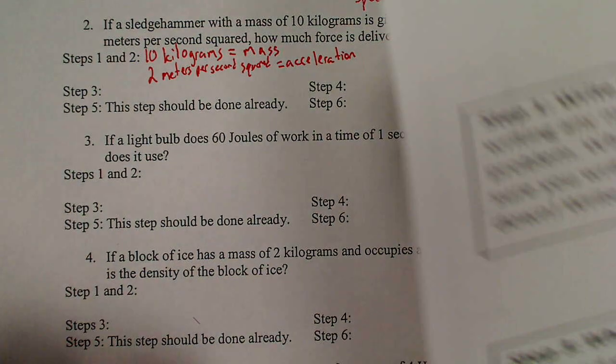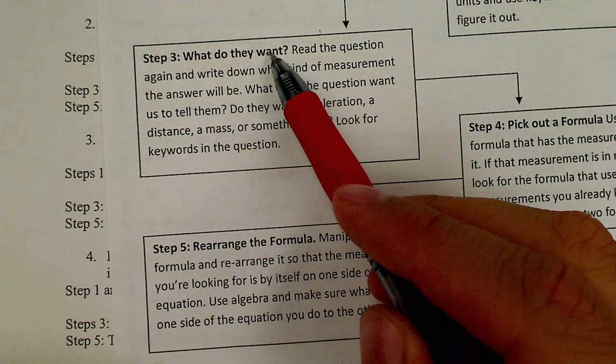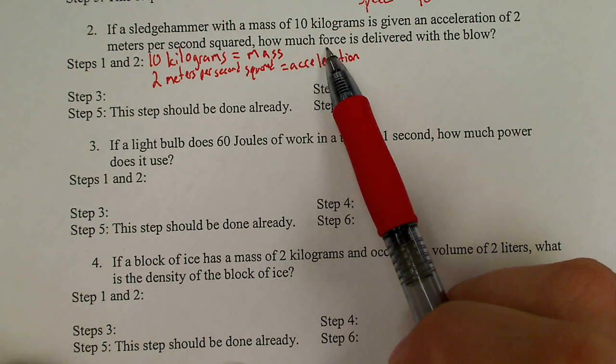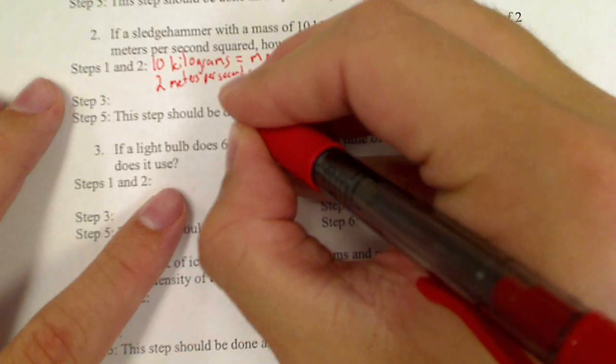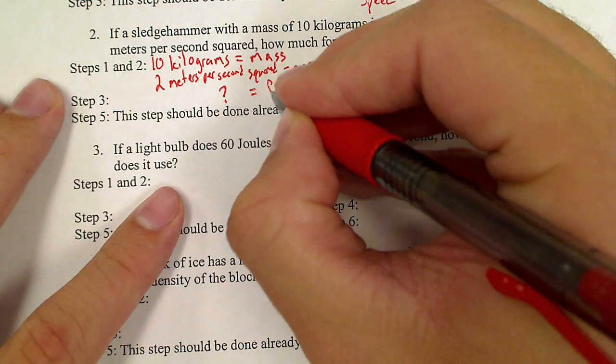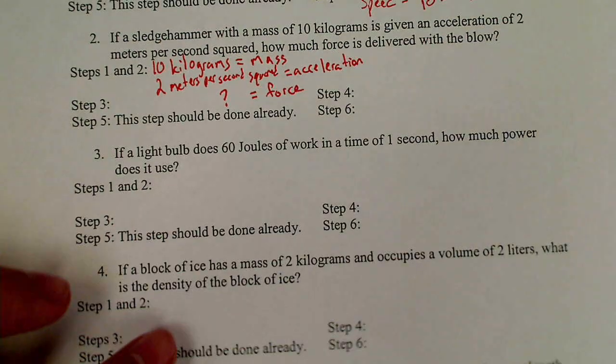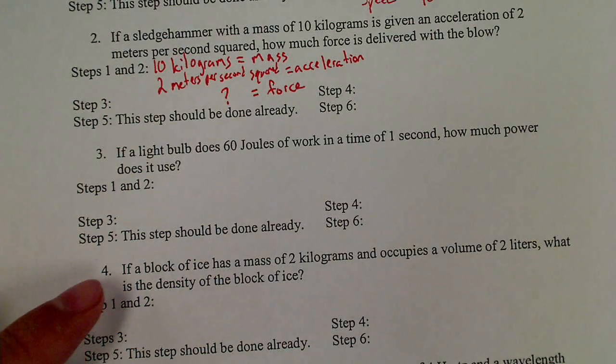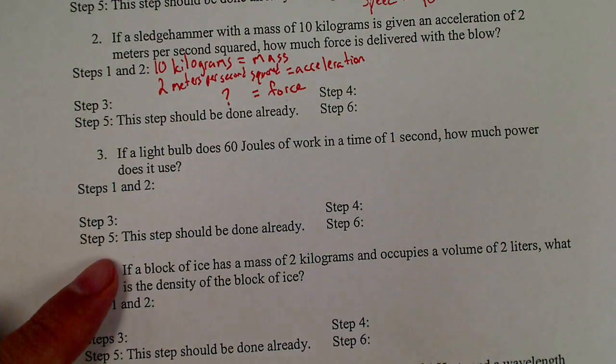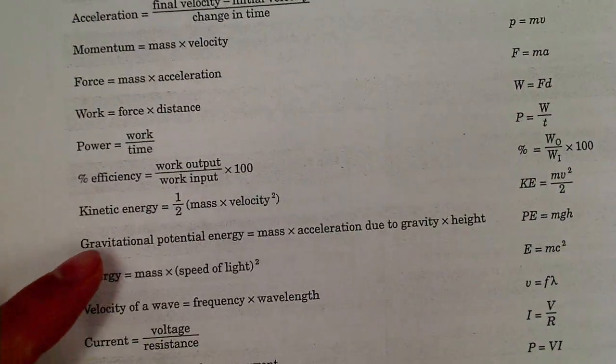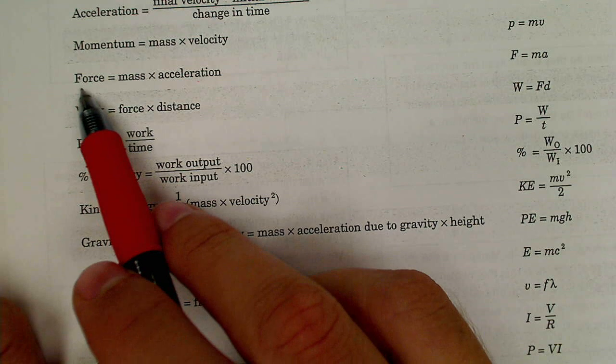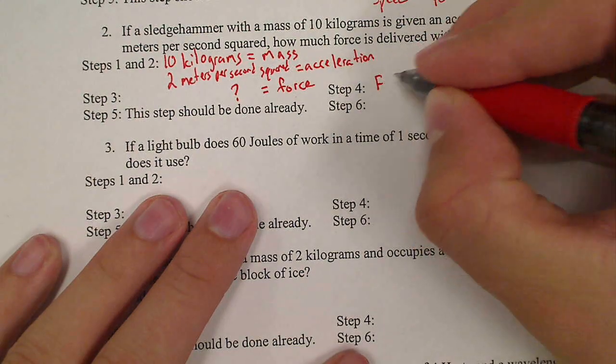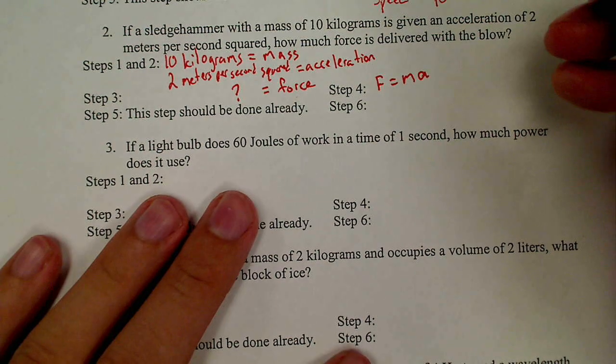Step 3, it's just asking us what do they want. It asks us how much force is delivered with a blow. Our question is force. Step 4, we're going to pick out a formula. When we're picking out a formula, it has to have force in it and mass and acceleration. Force equals mass times acceleration. See, all three words are there. F equals ma. F for force, M for mass, A for acceleration.